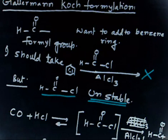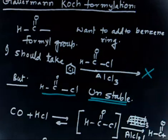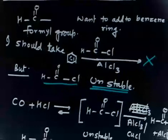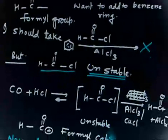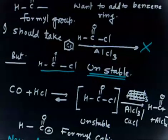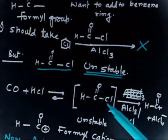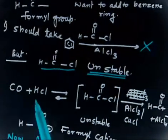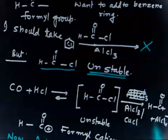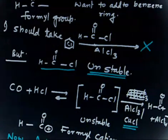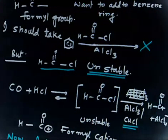So what Gattermann has done? Gattermann and Koch, both are the scientists. Now what they have done? To generate this HCOCl, basically you need an acylium cation. So what they have done is, they have taken carbon monoxide with HCl, and this forms an intermediate. This is an unstable intermediate, but for a very small time this can survive. And if you treat this HCOCl with AlCl3 and CuCl, you will have this cation: formyl cation and AlCl4-. So this Cl goes here and you will have a formyl cation. In this case, CuCl is acting as a catalyst. So you will have formyl cation.